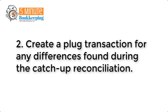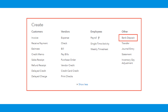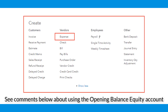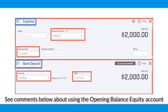Step 2: Create a plug transaction for any differences. If the difference is positive, create a deposit transaction and categorize it to an account called Opening Balance Equity. If the difference is negative, create an expense transaction and also categorize it to Opening Balance Equity. In either scenario, I'll make sure the date of the transaction is December 1, 2017 and make sure that the correct bank account has been selected.